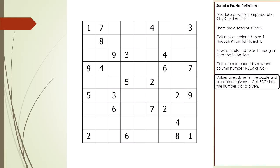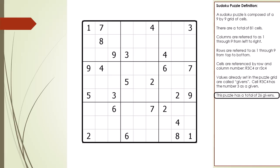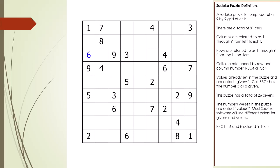Values already set in the puzzle grid are called givens. Cell 3,4 has the number 3 as a given. This puzzle has a total of 26 givens as a starting point. The numbers we set in the puzzle are called values. Most Sudoku software will use different colors for givens and values.